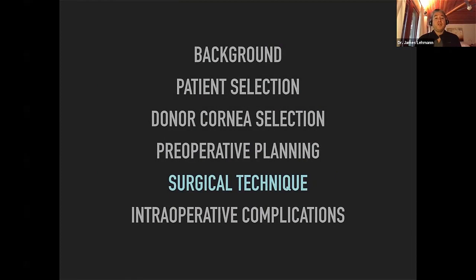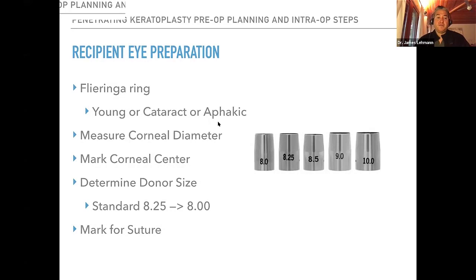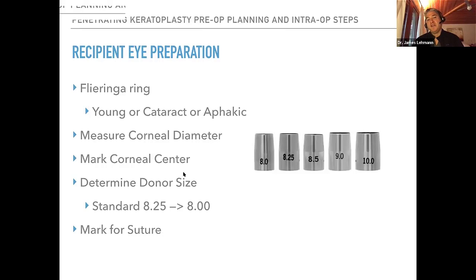About 40 minutes in with about 15–20 minutes remaining — let's talk about surgical technique. You need to prepare the recipient, punch the donor, trepanate the recipient, handle special situations, and then suture the cornea in. When preparing the eye, place a Flieringa ring if necessary, measure the corneal diameter, and mark the center. Most grafts I do are 8.25 mm donor into an 8 mm recipient — the donor needs to be bigger than the recipient. The reason: punching the donor from the endothelium side changes the shape slightly. Some people oversize by 0.5 mm but I found my Ks were too steep, so I do 0.25 mm.